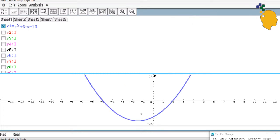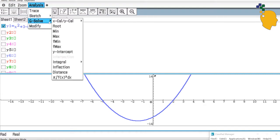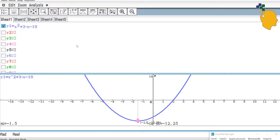Let's find the turning point of this parabola. As you can see, your turning point is on the very bottom, which is the minimum value. So let's go to analysis, g-solve, and click onto minimum. And here's your turning point.